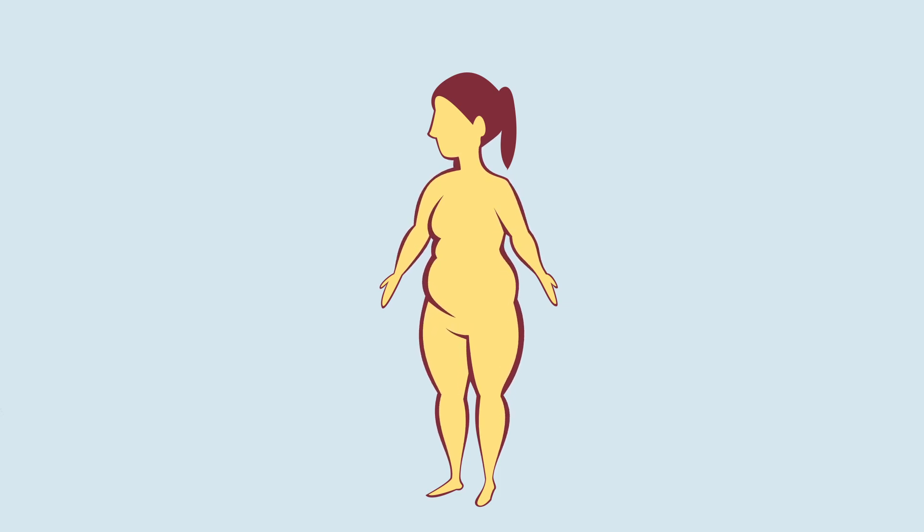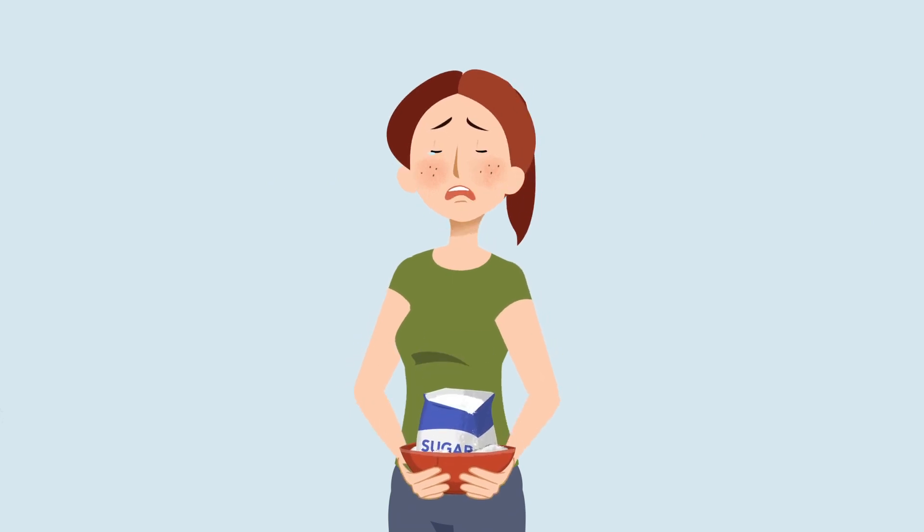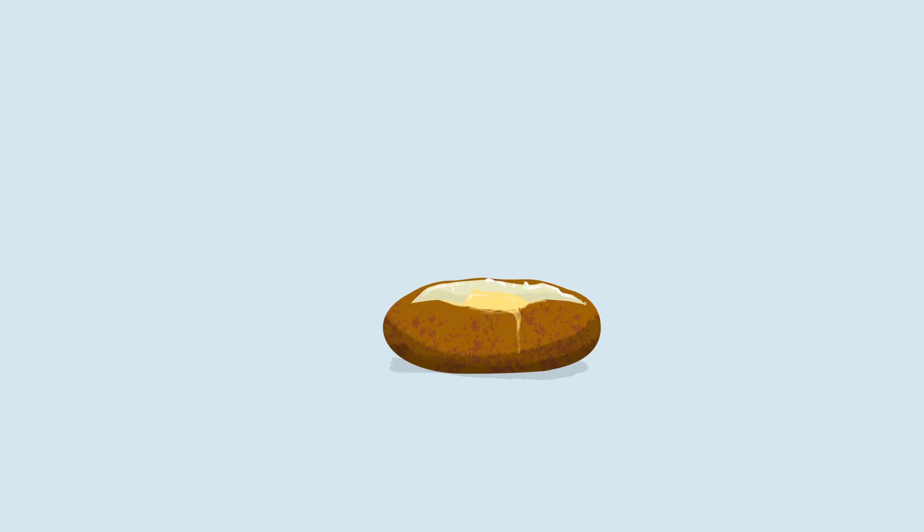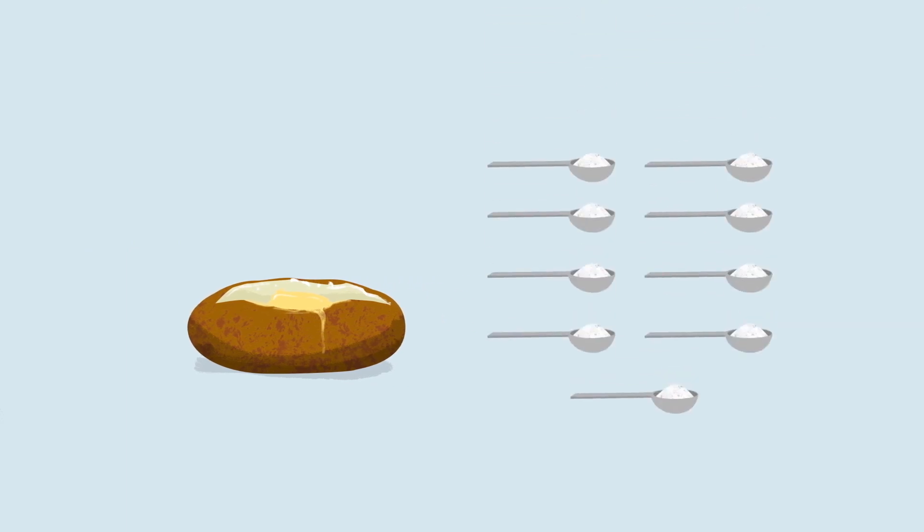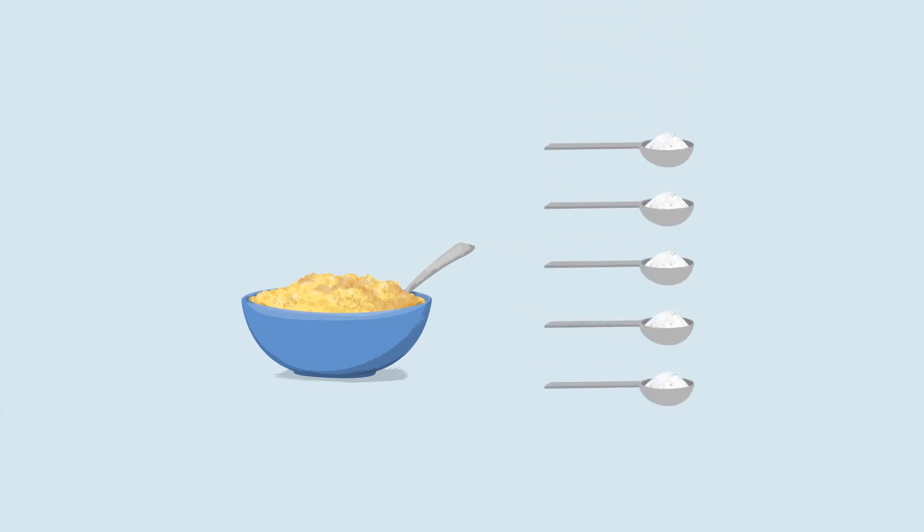Even some foods that most people would think of as totally healthy have a surprising amount of hidden sugars. A medium potato has the same effect on blood sugar as 9 teaspoons of sugar. A cup of oatmeal looks healthy, right? But it has a hidden sugar equivalent of 5 teaspoons of sugar.